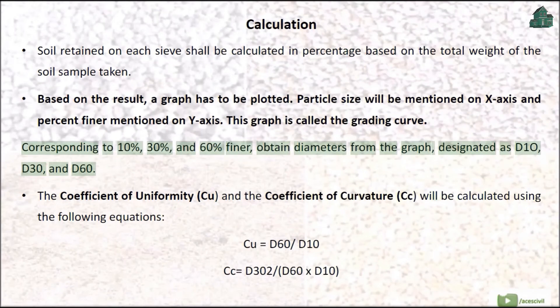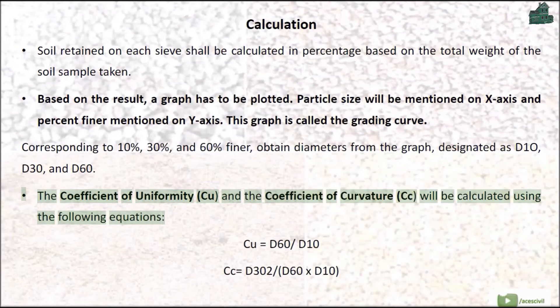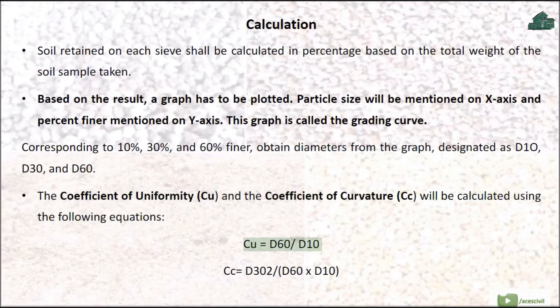The coefficient of uniformity, Cu, and the coefficient of curvature, Cc, will be calculated using the following equations: Cu equals D60 divided by D10. Cc equals D30 squared divided by D60 times D10.